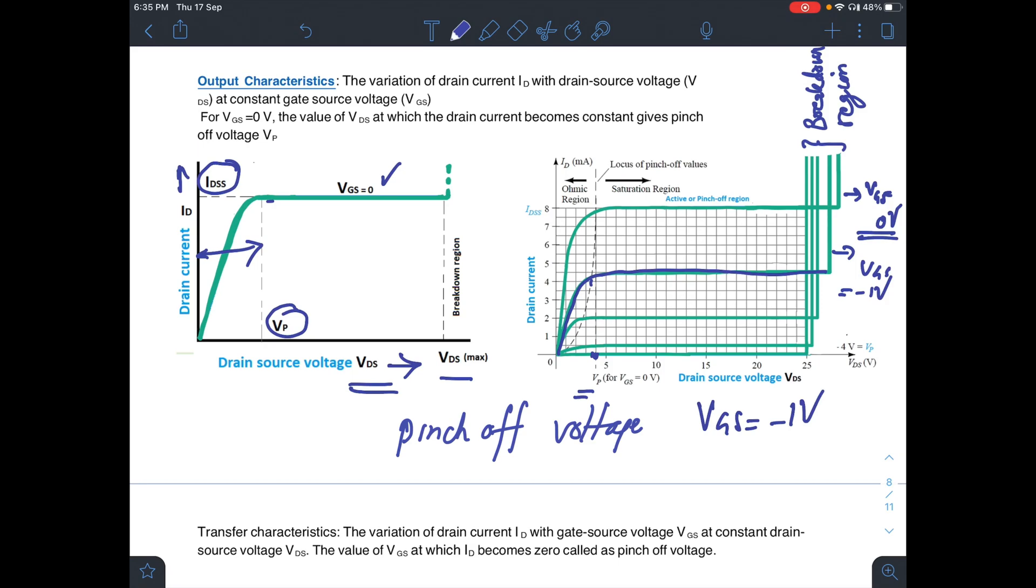As you make VGS more and more negative, ID will reduce. It will increase up till VP, that is pinch-off voltage, and after that it will remain constant independent of VDS. This is the maximum value of VDS. After this, if you increase VDS, the FET will enter into the breakdown region.